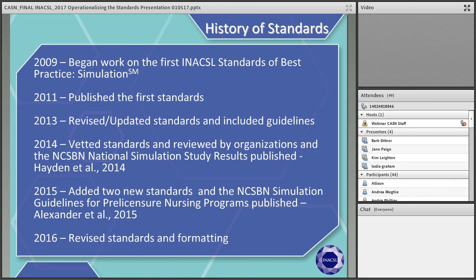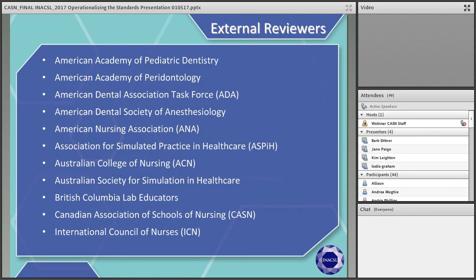In 2013, a standards committee revised the 2011 standards. In 2014, the national simulation study results were published. In 2015, two new standards were added as simulation science kept growing, and the guidelines for simulation were published by the National Council of State Boards of Nursing. In 2016, the present standards were revised with a new formatting based on feedback from external reviewers and a large group of international organizations that contributed feedback.